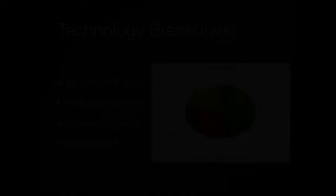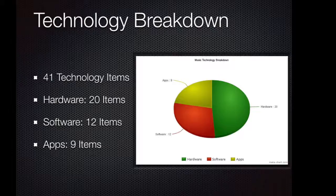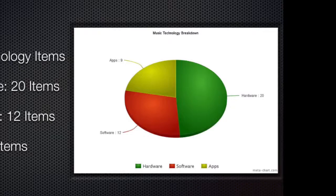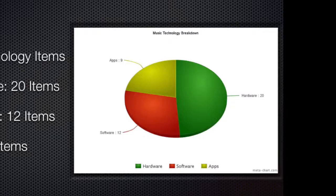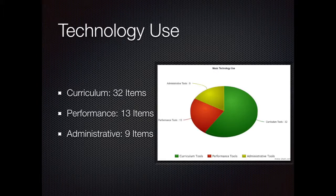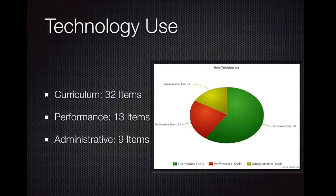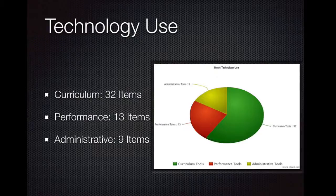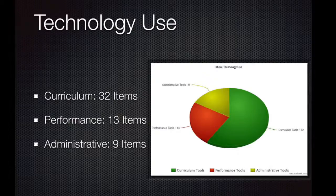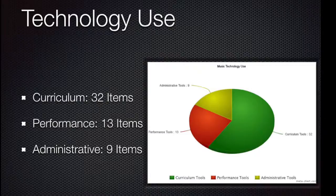I wanted to show you a breakdown of what we have here at High Meadows. We have a total of 41 technology items — hardware takes up almost half of those. Hardware is shown in green, software in red, and apps in yellow. With the iPads, we'll probably increase the apps as we go along. This chart shows how we use the technology; some items are used for multiple things, which is why there are more than 41 entries. The vast majority of what we use is in our actual curriculum — not for performance or administrative tasks — and that's something we want to keep as we add more technology.